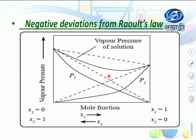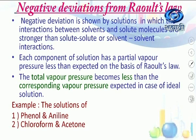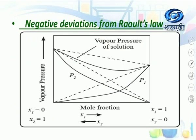The curve lies below the ideal line because each component has a partial vapor pressure less than expected on the basis of Raoult's law, so the partial vapor pressure is less. The total vapor pressure also becomes less than the corresponding vapor pressure expected for an ideal solution, so the total pressure curve also lies below the ideal curve.